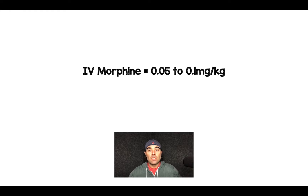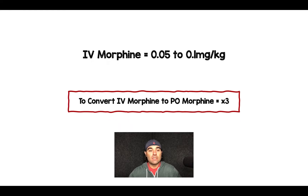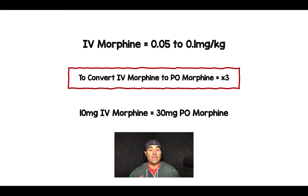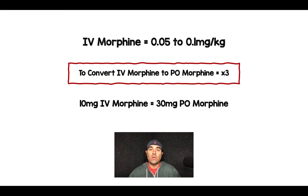The nice thing here is that to convert IV morphine to PO morphine, all you have to do is multiply by 3. So for example, if you have 10 milligrams of morphine IV, this is the equivalent of 30 milligrams of PO morphine.